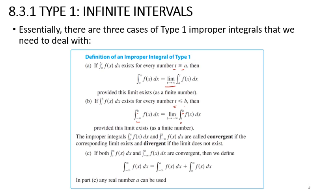Case c: if both the integral of f(x) dx from a to infinity and the integral of f(x) dx from negative infinity to a are convergent, then you can combine them into the integral from negative infinity to positive infinity. You split it into two parts: one from negative infinity to a, and the other from a to positive infinity. Any real number a can be used.